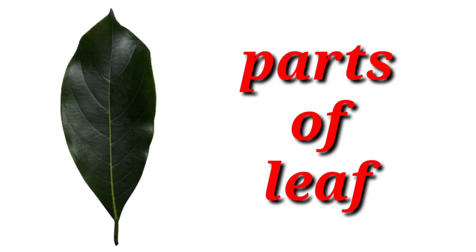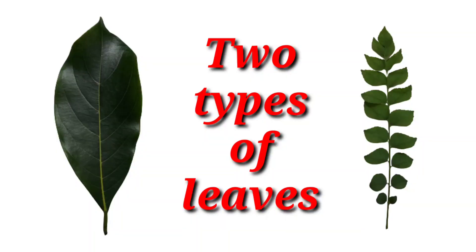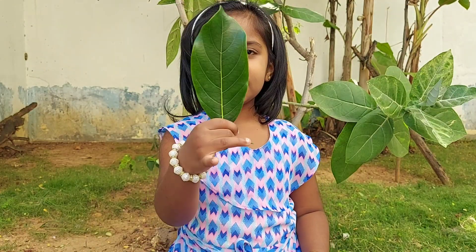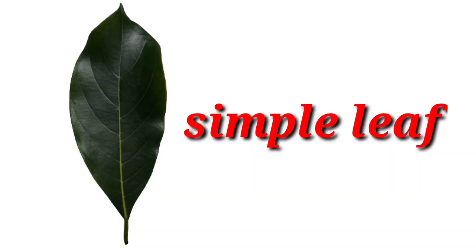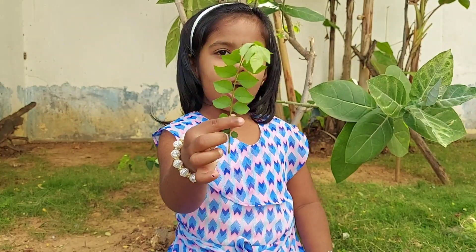And parts of the leaves. Actually, there are two types of leaves: one is simple leaf, and the second one is compound leaf.